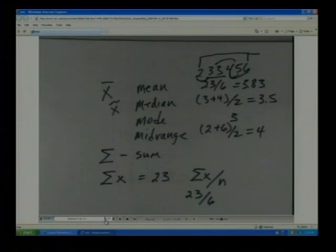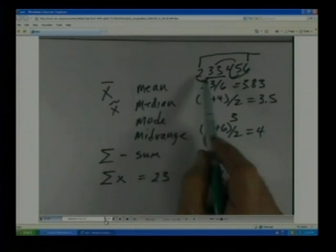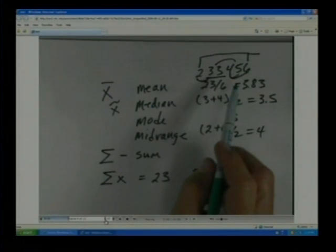The mean is the sum of the values divided by the count of the values. So that's 23 divided by 6. If we take all these numbers here - 2, 3, 3, 4, 5, and 6 - and we add those up, we get 23. 23 divided by 6 is going to be 3.83.